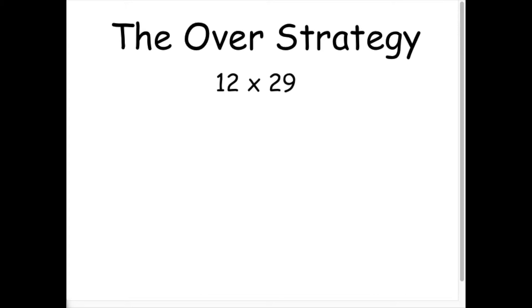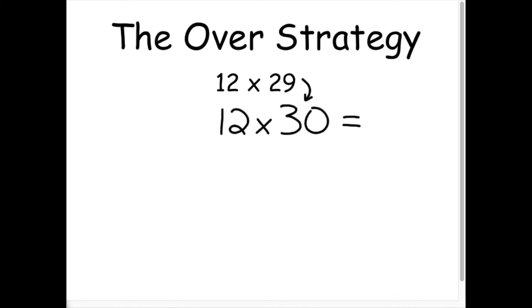Let's try this strategy with another example, 12 times 29. 29 is very close to 30, so I am going to go over my factor of 29 and multiply 12 times 30 first.